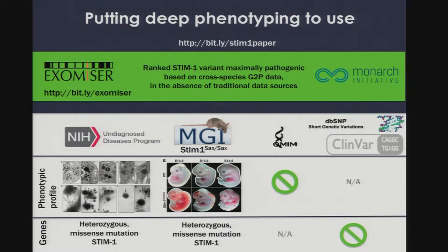We have a tool called Exomizer that also now works on whole genome sequence. We worked with the Undiagnosed Disease Program to apply these phenotype-matching similarity algorithms to help prioritize a variant for a family in the STIM1 gene. There was no known information in any public clinical databases, but we had a really nice match from the MGI source. In combination with traditional exome analyses, pathogenicity measures, Mendelian inheritance patterns, and frequency filters, the phenotypic similarity in the mouse allowed us to prioritize this new disease caused by a STIM1 mutation.